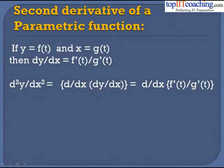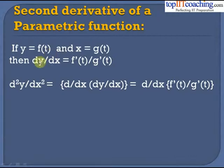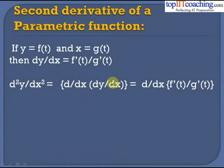In the previous lecture we saw parametric functions and how to differentiate them. Now we'll find the second derivative of a parametric function. If y = f(t) and x = g(t), then dy/dx = f'(t)/g'(t). For the second derivative, d²y/dx² = d/dx(dy/dx) = d/dx(f'(t)/g'(t)), so we find dy/dx first and then differentiate it again with respect to x.